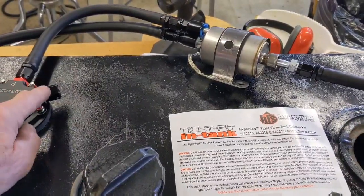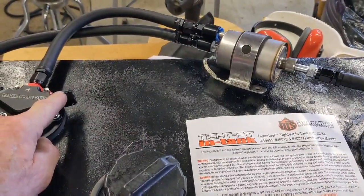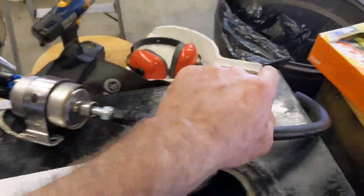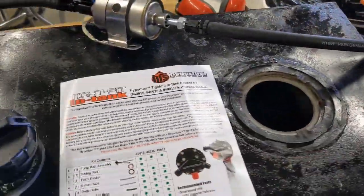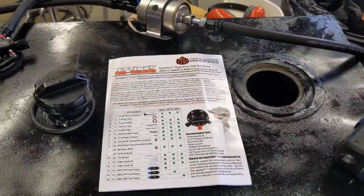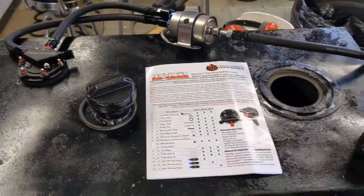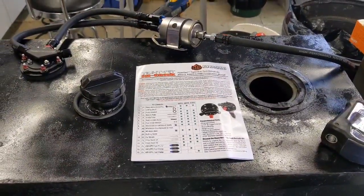So this is your overflow line here, which I normally connect up and just run a line up over here. And then when I get my sender, I'll put my sender in there. But it's mocked up and ready to go, ready to bolt in once the parts get in.